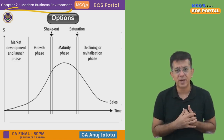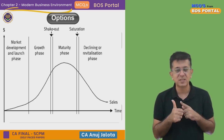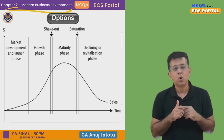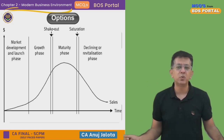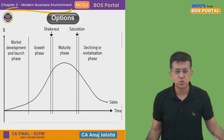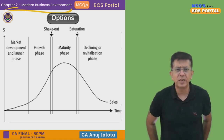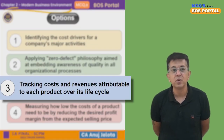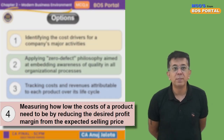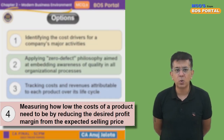Life cycle costing helps you identify the sales and costs over the entire life cycle divided into these four stages. So option three is talking about life cycle costing.